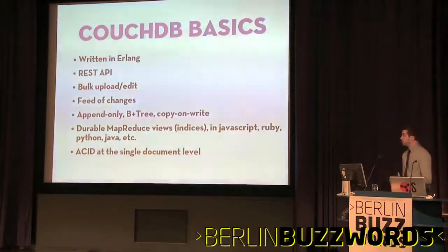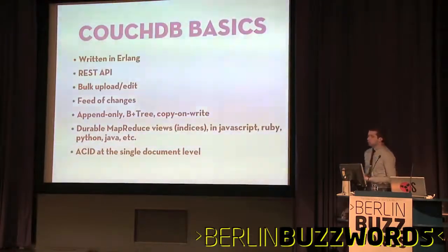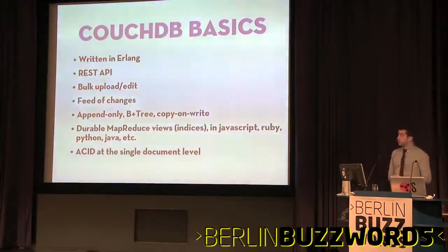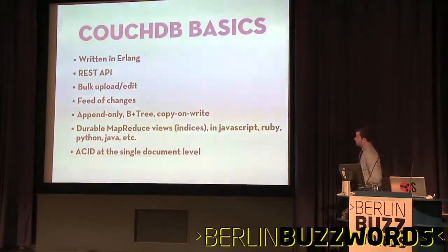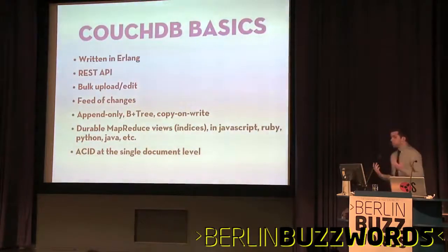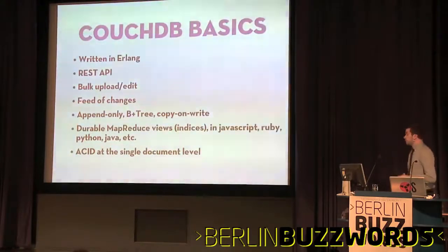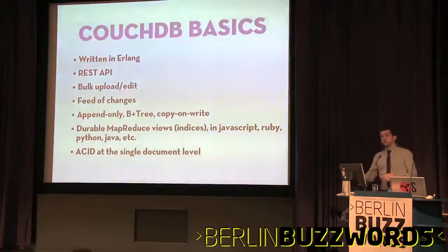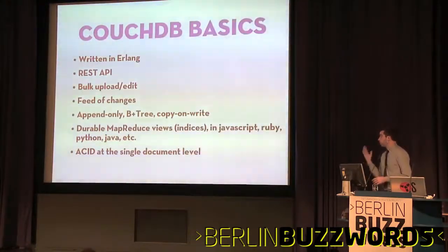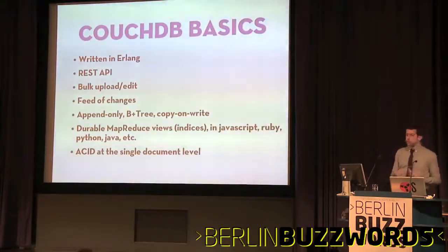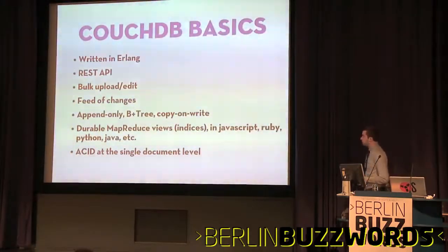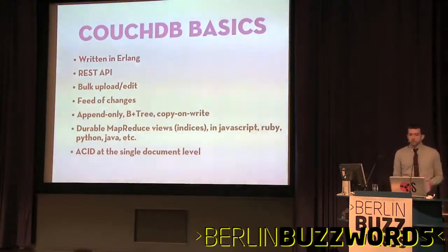Other basics: the database is written in Erlang. The main API is the usual GET, POST, DELETE, PUT that you use in HTTP. You have several APIs on top of that, including a change feed that lets you see all the stuff happening on your DB. The core storage is an append-only B-tree, which means you need to run compaction on it every now and then. Indices are done through MapReduce views that are written to disk and persistent, so querying the same query twice won't take as long the second time. Those are mostly expressed in JavaScript, although CouchDB supports Ruby, Python, and other languages. You get ACID properties at a single document level, but nothing beyond that.